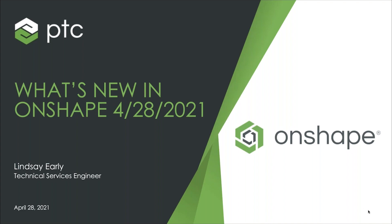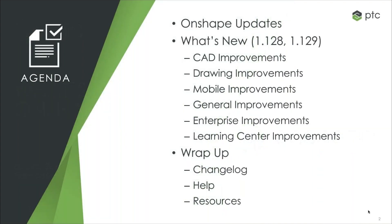Let's get started. First, we're going to talk a little bit about how Onshape does updates, and then we'll get into the actual improvements seen in versions 128 and 129. Specifically, we have some CAD improvements, a lot of drawing improvements, some mobile improvements, some general settings type improvements, enterprise, and also we have a new addition to the Learning Center. And then we'll wrap up talking about how you can get into the changelog, help, and other resources.